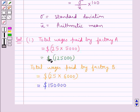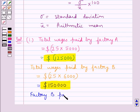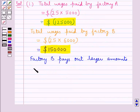Now, when we compare these two wages paid by the two factories A and B, we find that factory B pays out larger amounts as weekly wages.